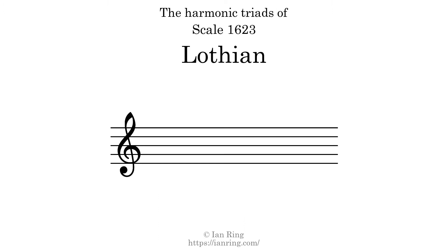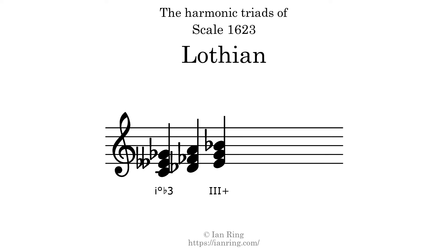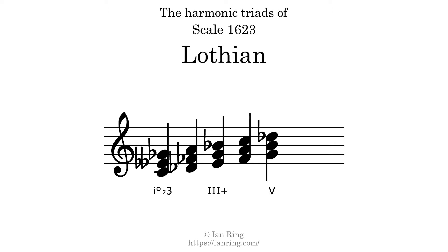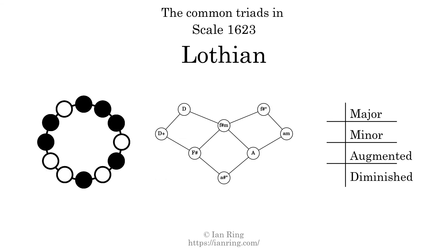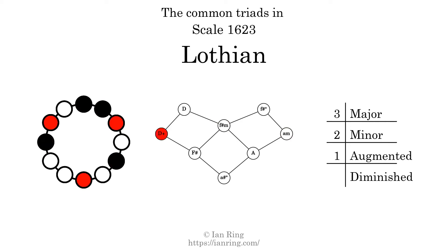Here are the harmonic triads present in this scale. The diagram in the center is a graph of parsimonious voice leading between triads. There are 3 major triads, 2 minor triads, 1 augmented triad, and 2 diminished triads.